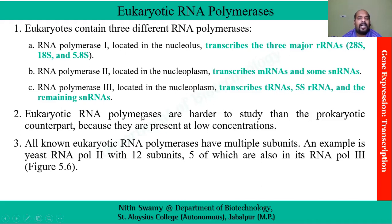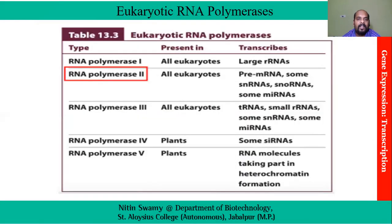Eukaryotic RNA polymerases are hard to study as they are low in concentration, and all eukaryotic RNA polymerases have multiple subunits. This table reveals that there are two more polymerases, but those two polymerases are present in plants, not in other eukaryotes. So we would be studying about these three only in terms of eukaryotic RNA polymerases.